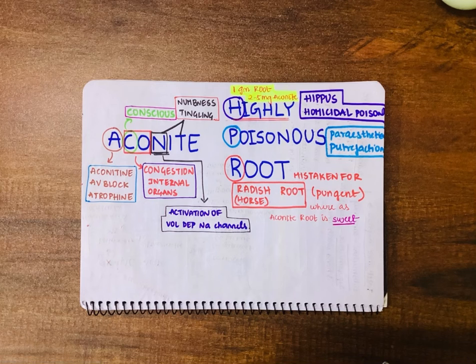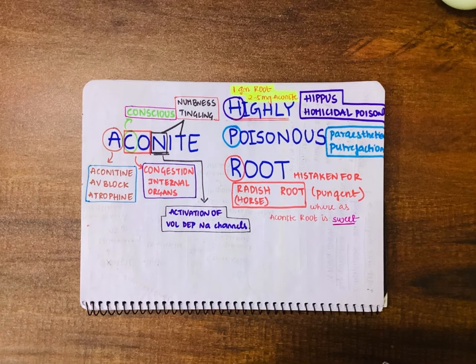CO stands for congestion. In a post-mortem autopsy, you can see congestion of internal organs such as the stomach, duodenum, lungs, liver, etc.